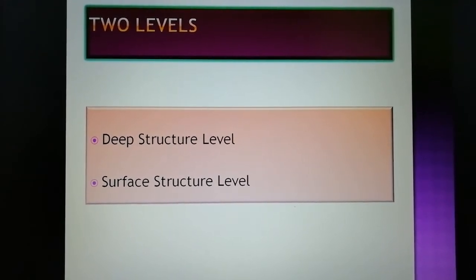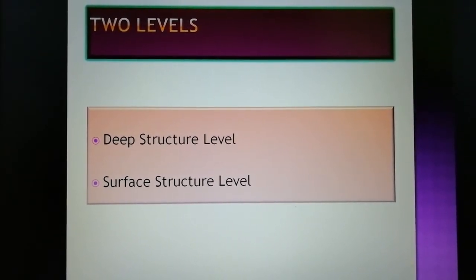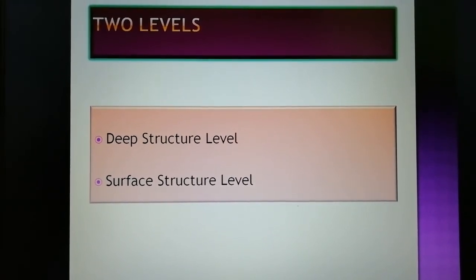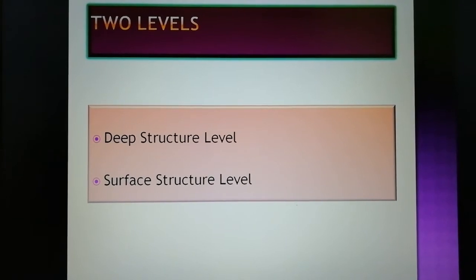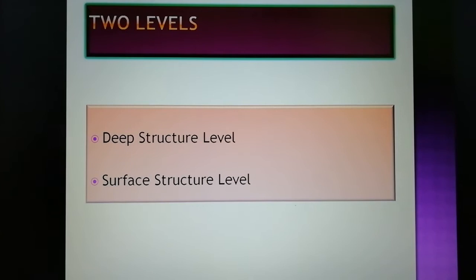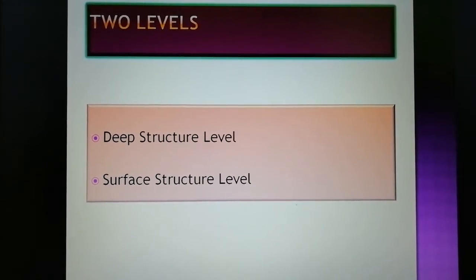All sentences of a language, Chomsky says, have both a surface structure and a deep structure. The meaning of the sentence is conveyed by the deep structure, whereas the form is given by the surface structure. A deep structure becomes a surface structure after transformation.